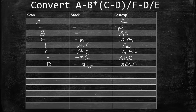Scan closing bracket — this is important. When closing bracket comes, pop operators from the Stack until the opening bracket is found. Pop minus and push it to PostExp. Discard both brackets. PostExp is now A B C D minus. Stack now has minus and *.